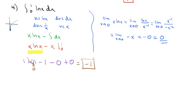So to answer our question — how do we integrate at infinity? We consider what value the integral is approaching as we approach infinity. If we're approaching a finite value, we use that value. If we're not approaching a finite value, we say the integral diverges. Take a look at the homework assignment and try a few of these, and we will take a closer look in class. Good luck.